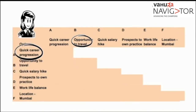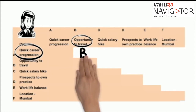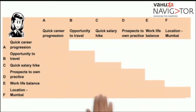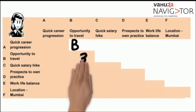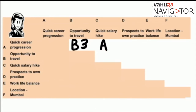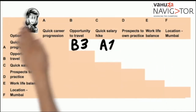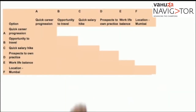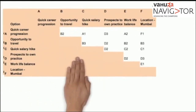Hence she will mark the second cell with the alphabet B. For Reshma, having the ability to travel is very important compared to quick career progression in her initial years, so she will mark it with three points. However, quick career progression is only slightly more important than having quick salary hikes, which she will mark accordingly. Follow the same routine for all the rest of the career expectations.